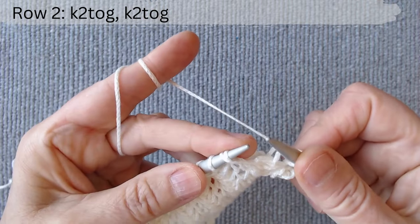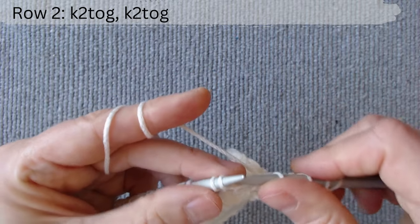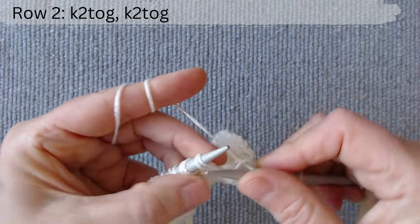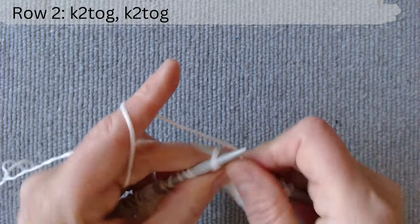Again, knit two together through the front loop, knit two together through the back loop. Knit in this manner until the row is complete.